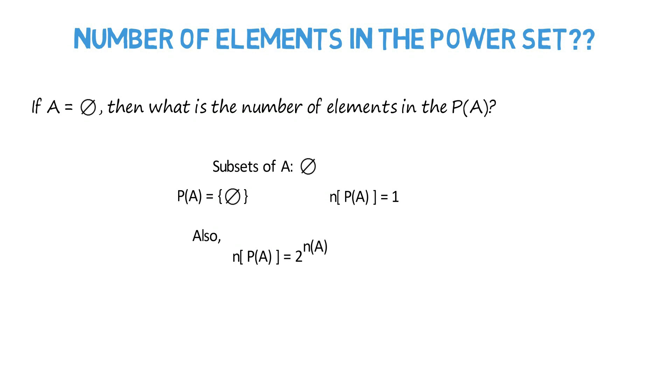Since the question asks only about the number of elements, we could have directly used this formula as well. Here number of elements in the set A are zero. Therefore, the number of elements in the power set of A calculates to 1.